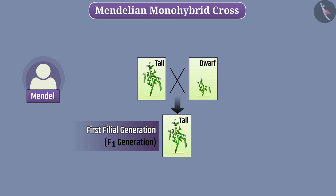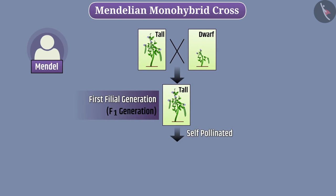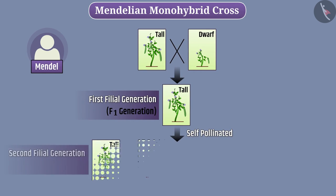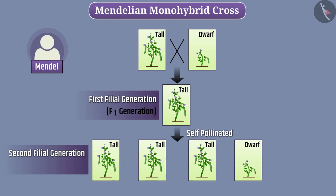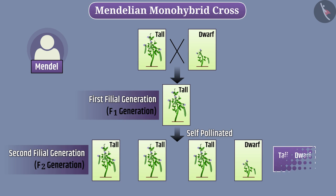Then, he self-pollinated the F1 generation plants and grew the second generation, i.e. F2 generation plants. All the plants in F1 generation were tall. But in F2 generation, the ratio of tall plants to dwarf plants was 3 is to 1.